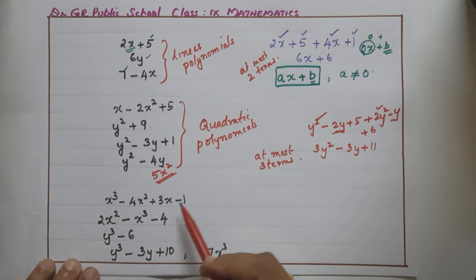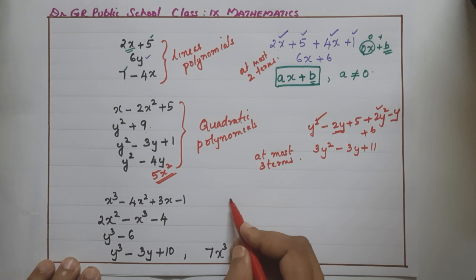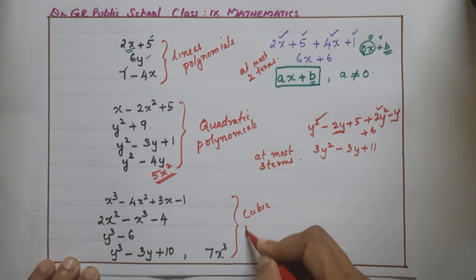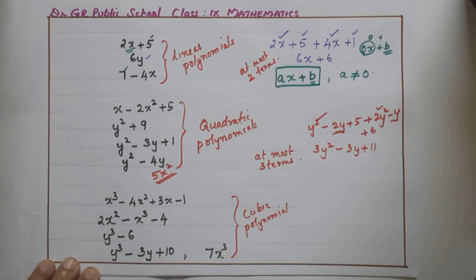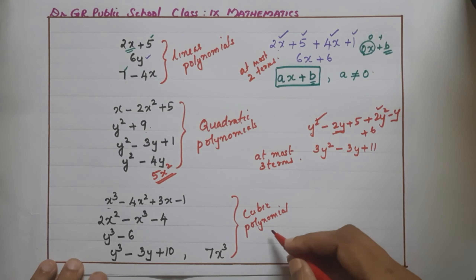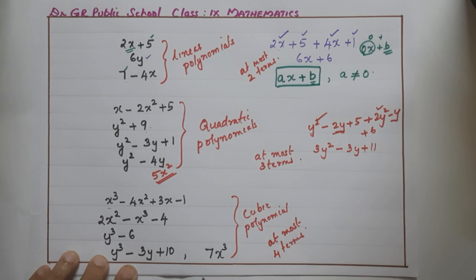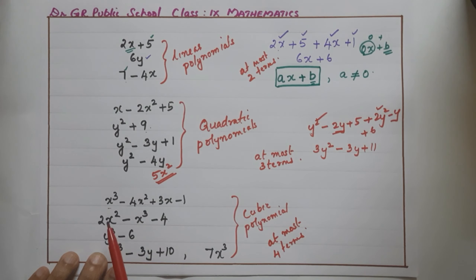Now consider the next set of polynomials, all having degree 3, so they are called cubic polynomials. The maximum number of terms in a cubic polynomial is 4. We can have a single-term cubic polynomial, a two-term (binomial) cubic polynomial, a three-term cubic polynomial, or a maximum four-term cubic polynomial.